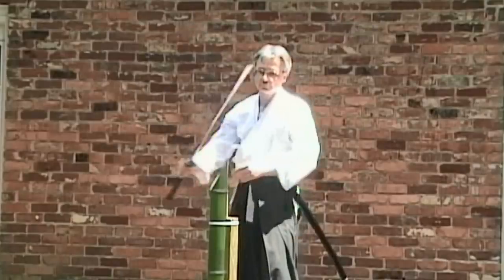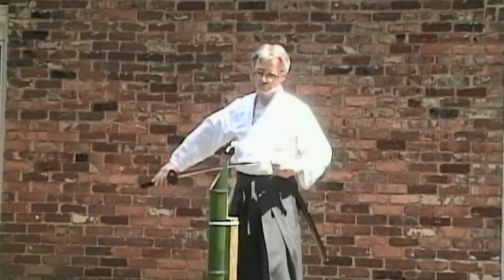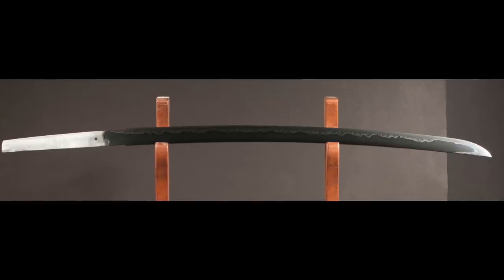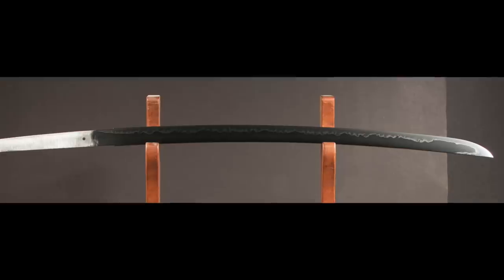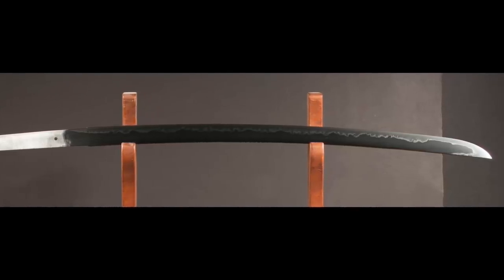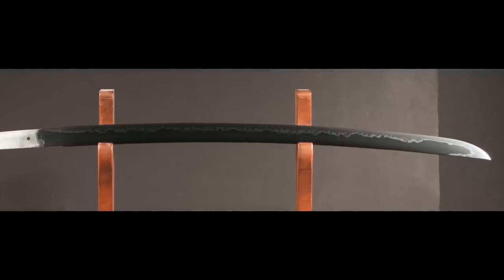So an ideal sword is both very hard and capable of shock resistance, two qualities which are at war with each other. A really hard sword will be brittle and subject to cracking, but a really soft and shock resistant sword will dent every time you hit something hard. It's an engineering conundrum.